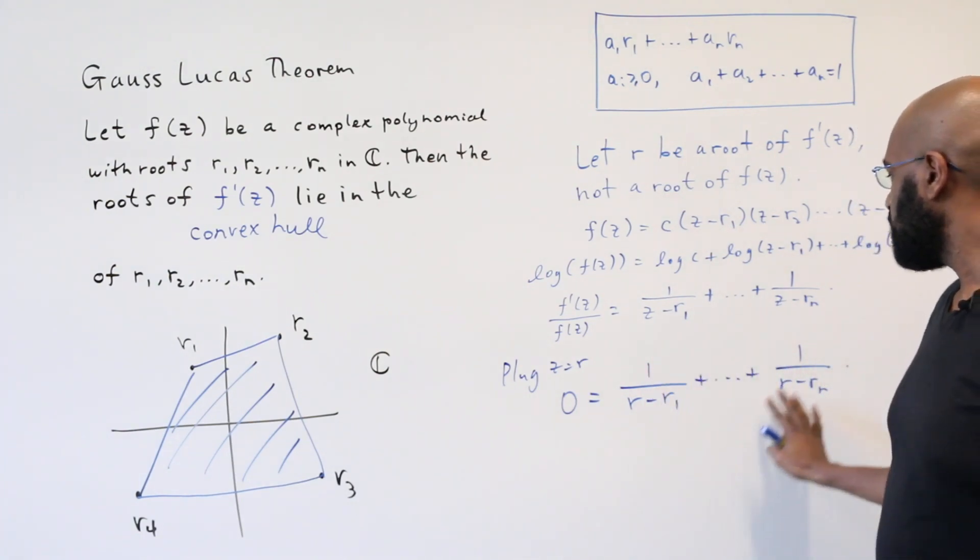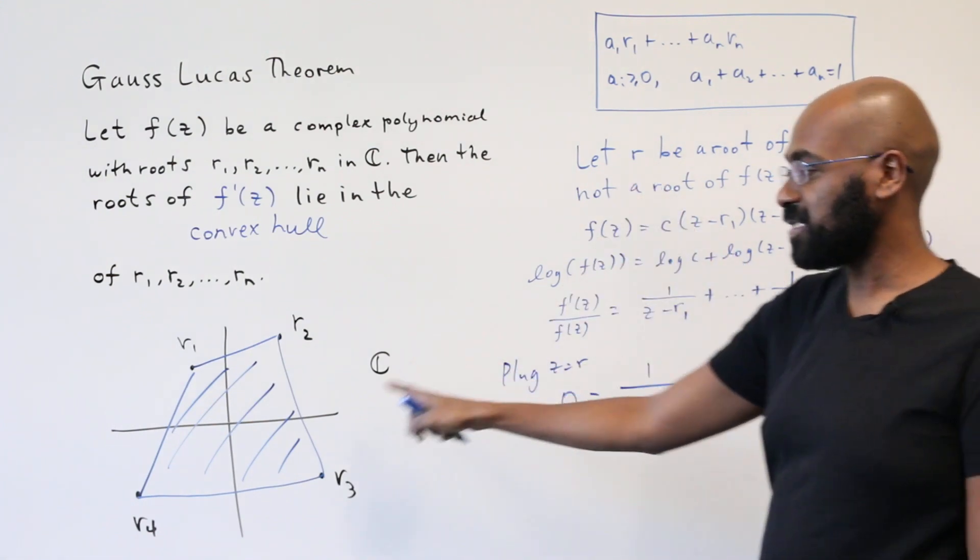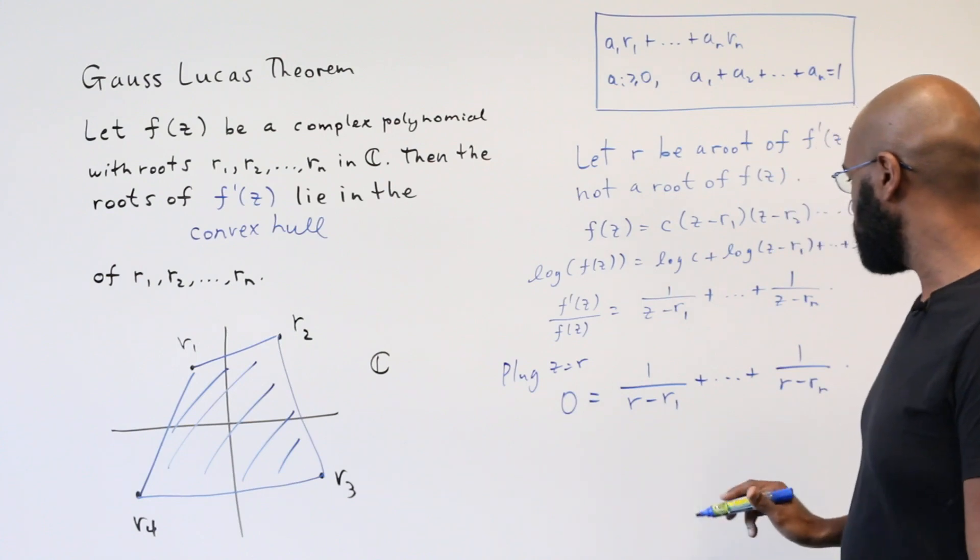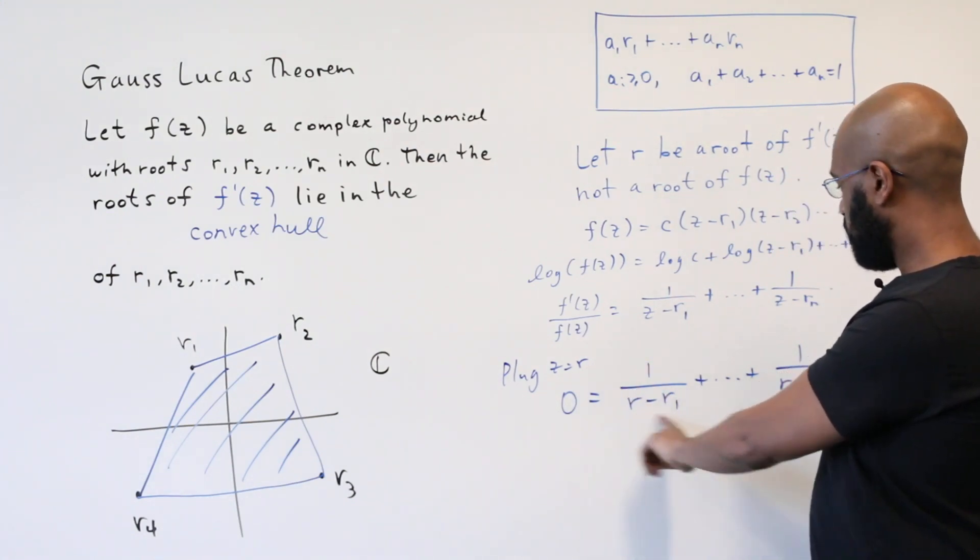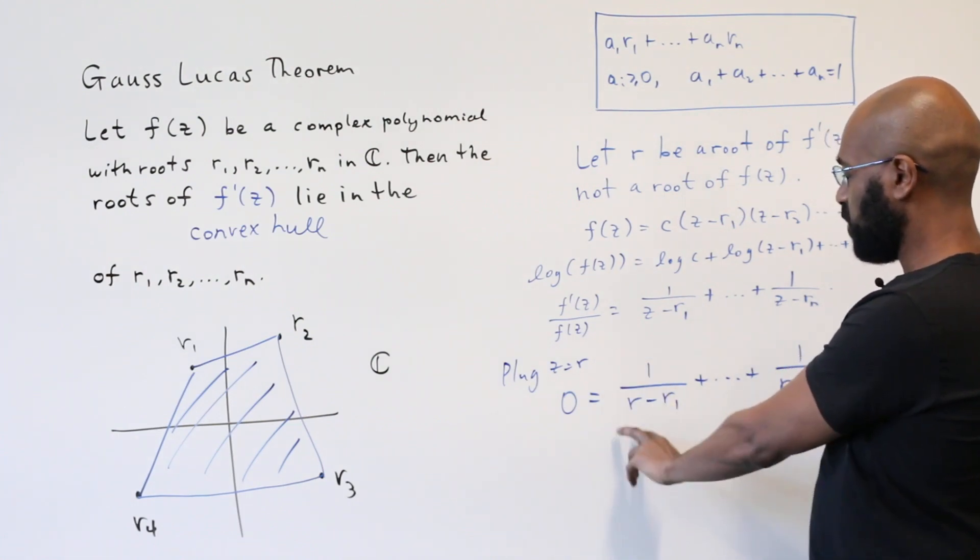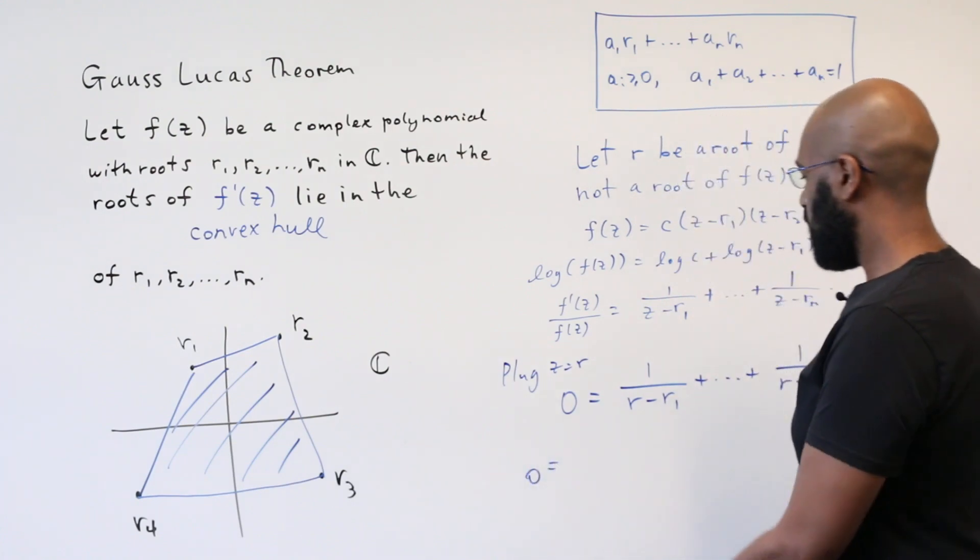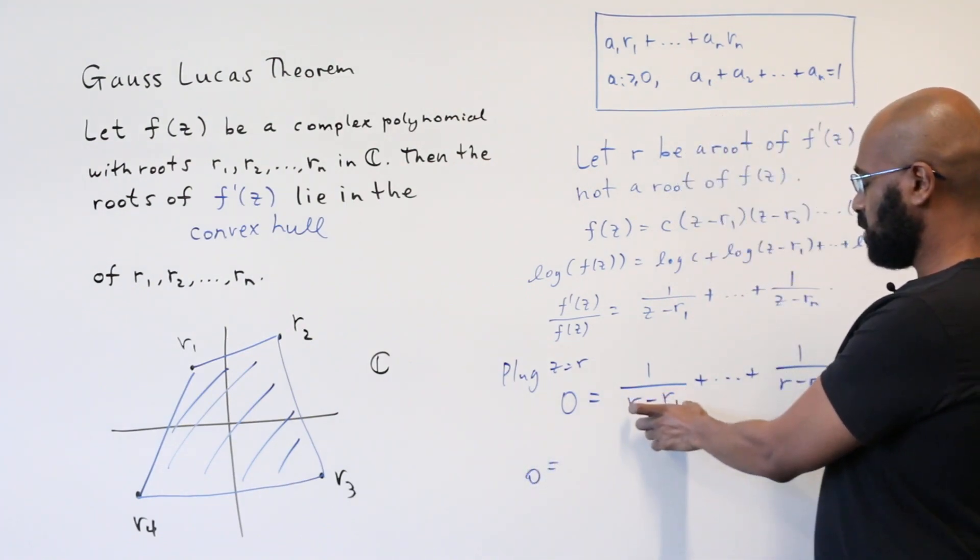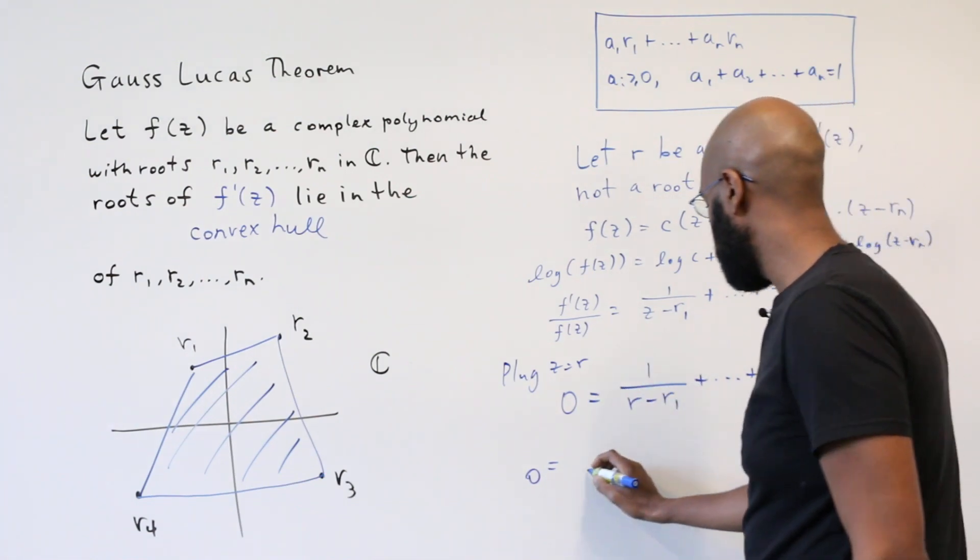We can write this in an interesting cleaner way that's going to illuminate why this root has to be in the convex hull of these points. Let's multiply each of these fractions by its conjugate over its conjugate. If we do that, any complex number multiplied by its conjugate is the modulus squared.